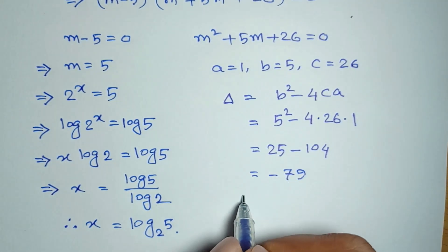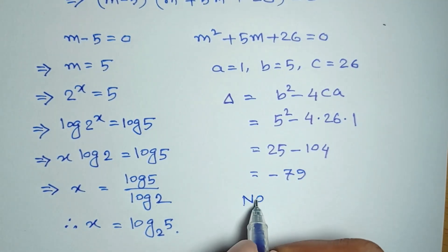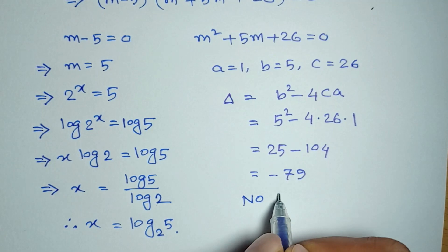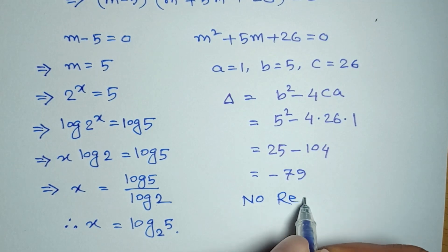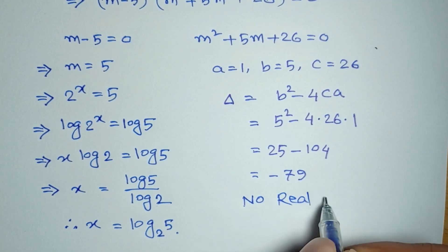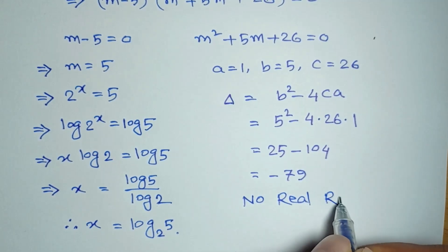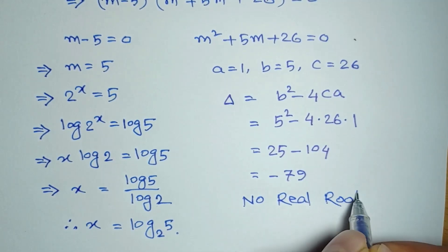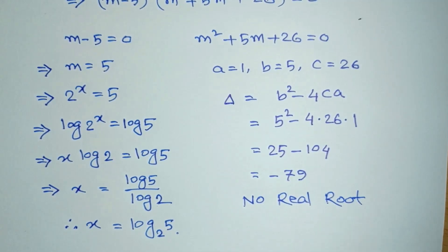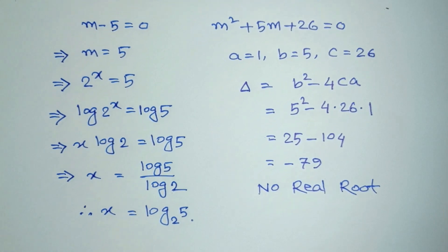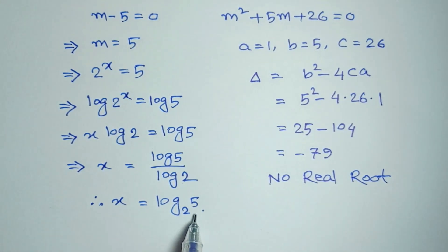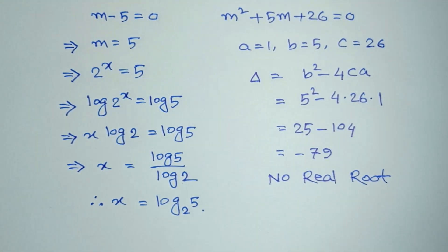Since the discriminant is negative, there is no real root from the quadratic factor. Therefore x is equal to log 5 to the base 2 is the solution of this equation. Thanks for watching.